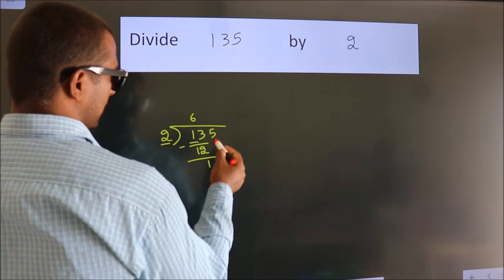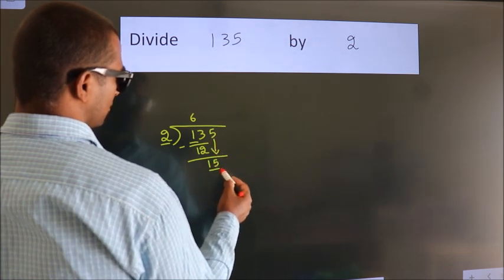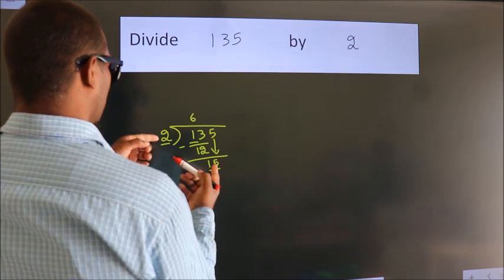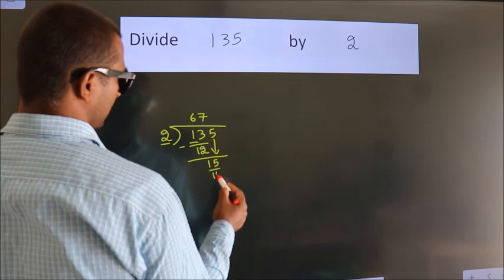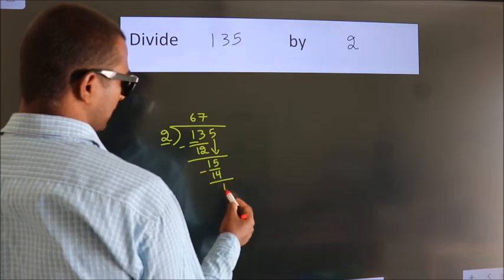After this, bring down the next number. So 5 comes down, making 15. A number close to 15 in the 2 times table is 2 times 7 equals 14. Now we subtract and get 1.